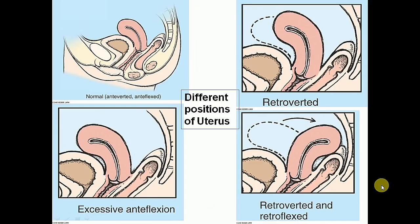There are different positions of the uterus. The normal position is the anteverted, anteflexed position. There is also the excessively anteflexed position, the retroverted position in which the long axis of the cervix is in line with the vagina — with a tendency of the cervix to invaginate into the vagina — and lastly the retroverted and retroflexed position of the uterus.